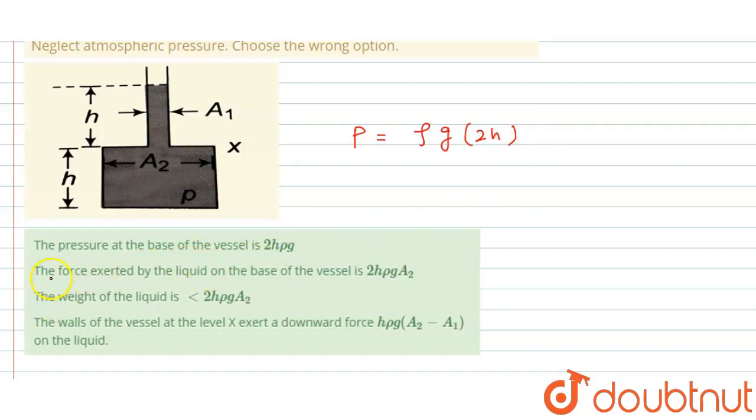Second option: the force exerted by the liquid on the base of vessel is 2hρg into A2. This is also correct because we know that force equals pressure into area. Area of base is A2, so pressure at base into area equals 2ρgh into A2. This is also a correct option.